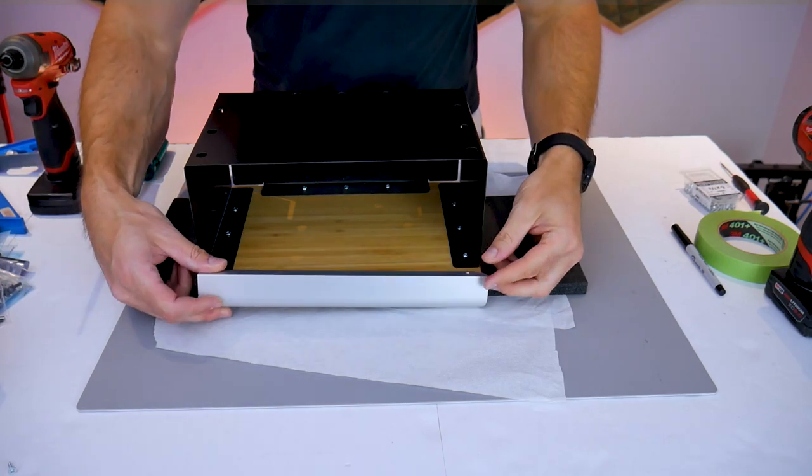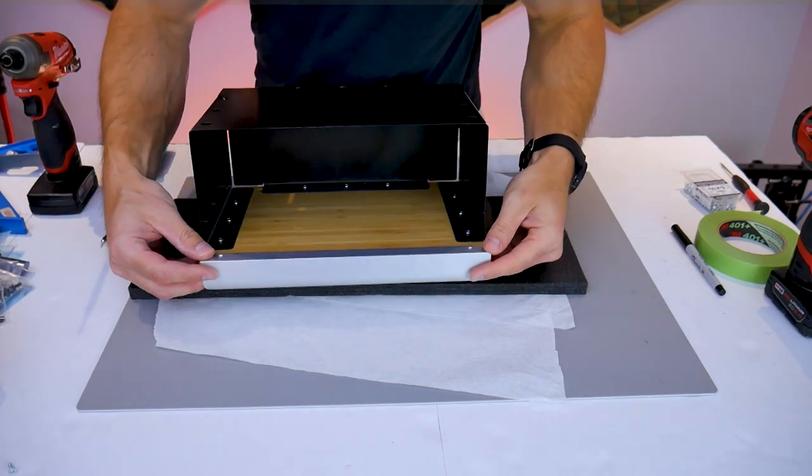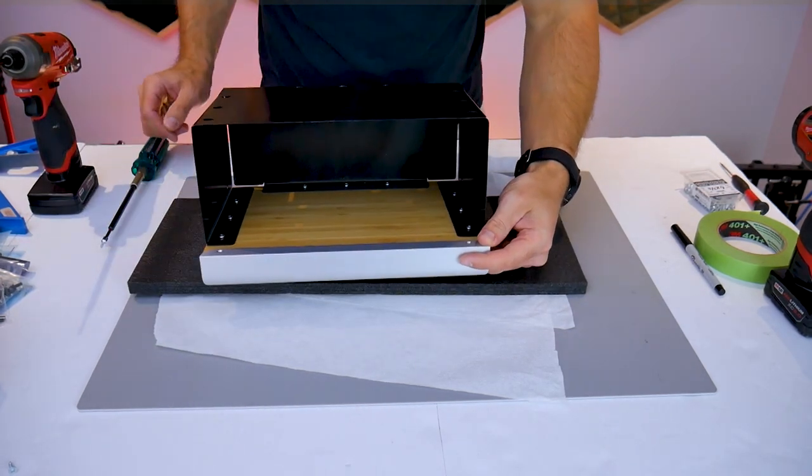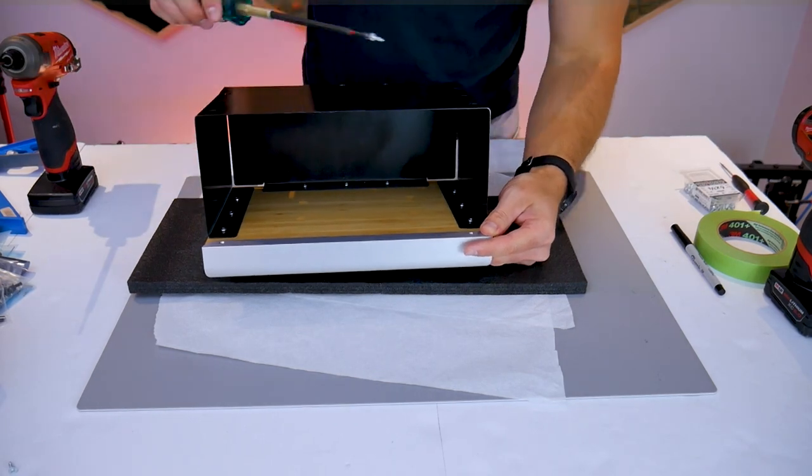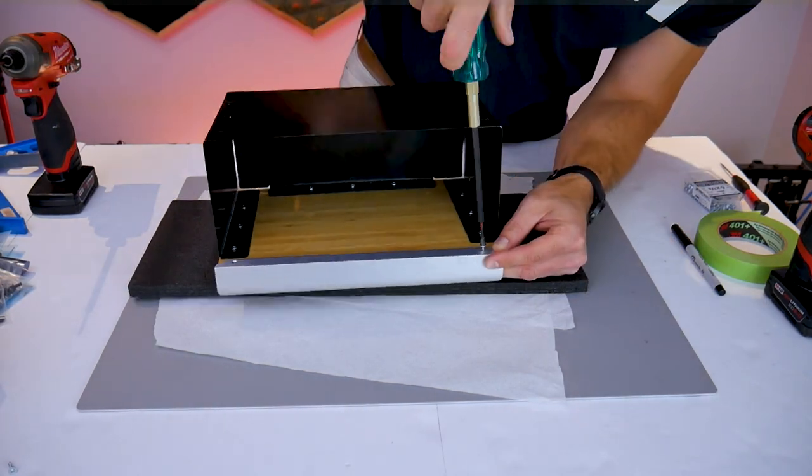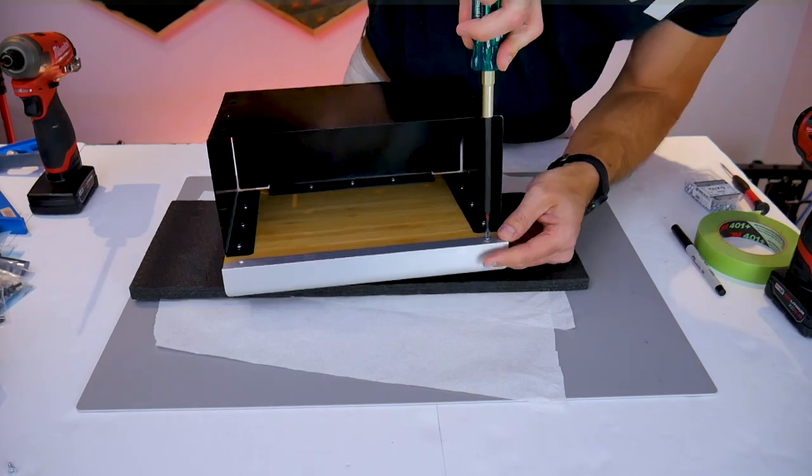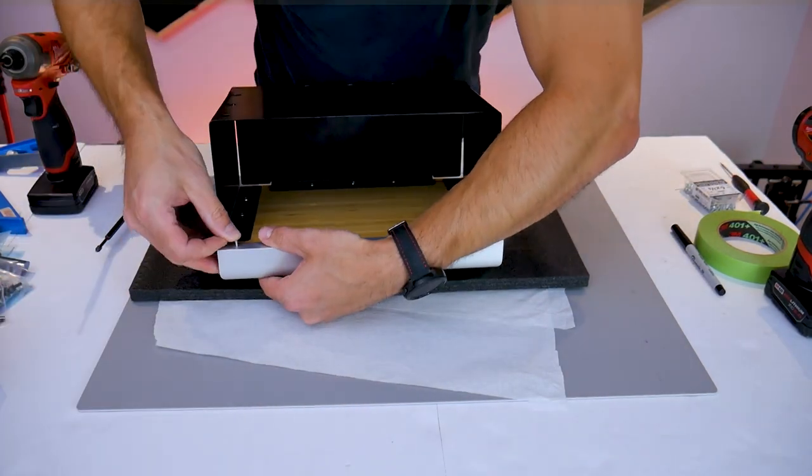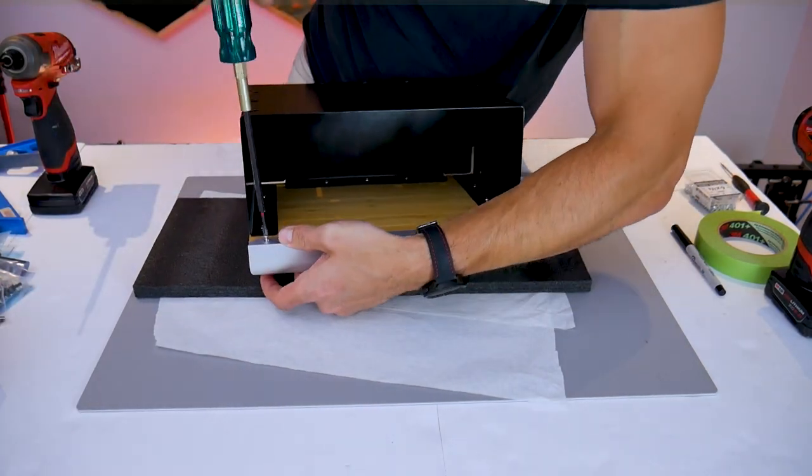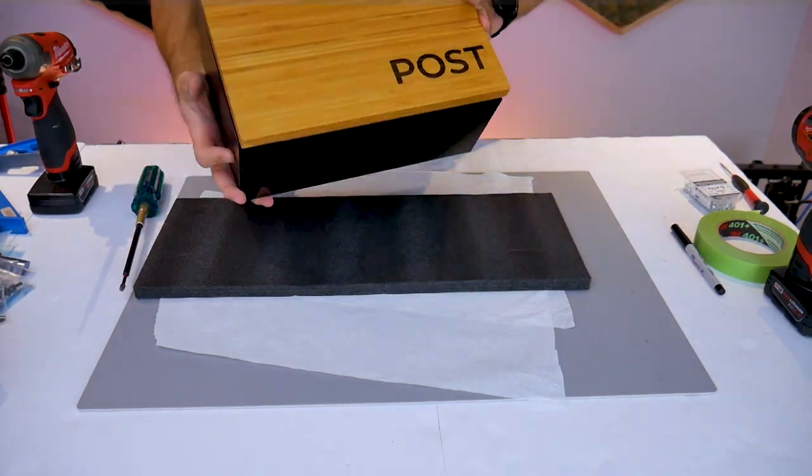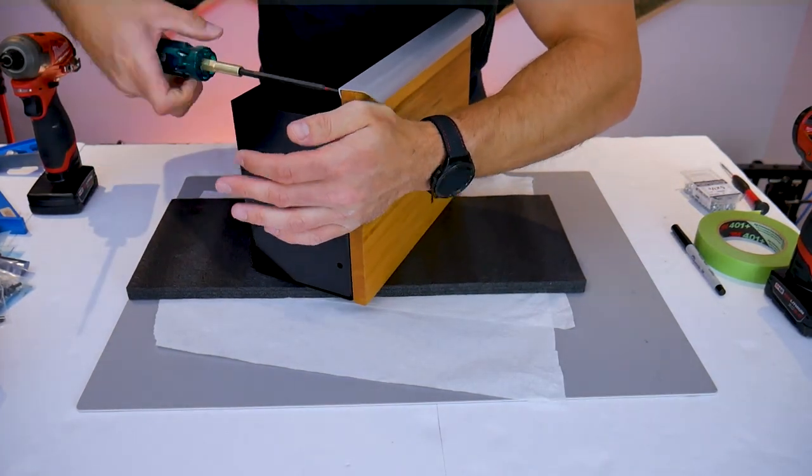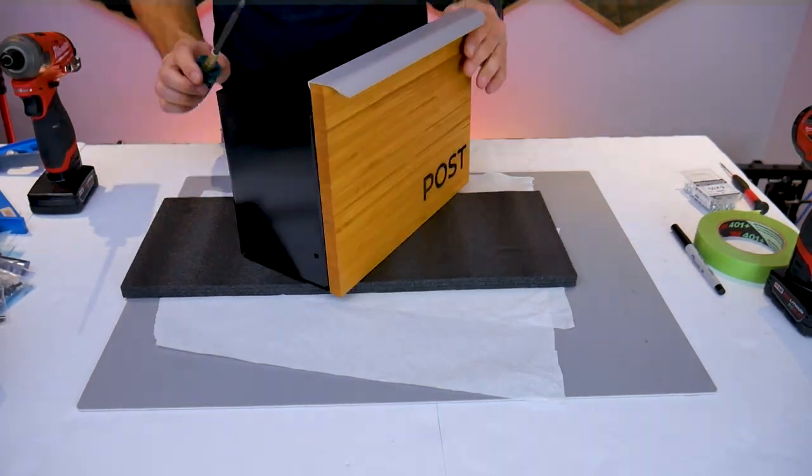The IKEA handle is next and on the back of the handle there are countersunk screws. The handles come with hardware so we're going to be using the IKEA hardware to attach the handle to the back of the wooden panel. Just keep in mind that if you use a thinner wooden panel for your own project you're going to have to source the appropriate hardware so your screws don't pierce through the front of your panel.